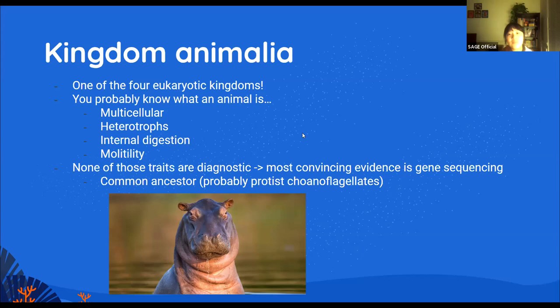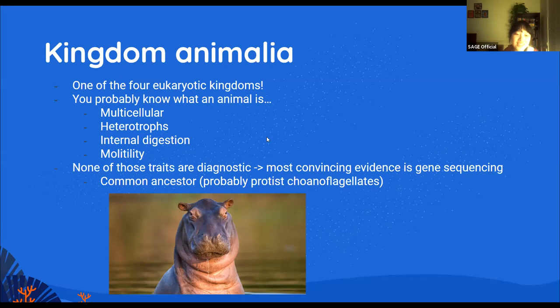We call animals that don't move sessile. None of these characteristics describe all of Kingdom Animalia. Even though they are one group, classification is mostly based on their DNA and gene sequences. They most likely all came from a common ancestor that was probably the protist choanoflagellate — a protist with a flagella, which is what our sperm looks like, and that's why scientists think we came from them.